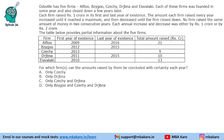Hello everyone, welcome to Aptitude Lab. This set is from CAT 2023, Slot 2 DILR. It says that Ortsville has 5 firms: A, B, C, D, E. Each of these firms was founded in some year and also closed down a few years later. Each firm raised Rs 1 crore in its first and last year of existence. The amount each firm raised every year increased until it reached a maximum and then decreased until the firm closed down.